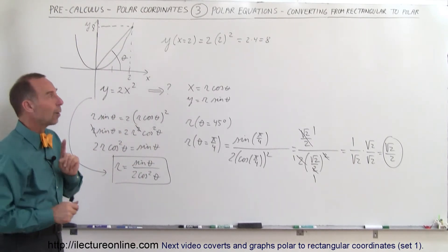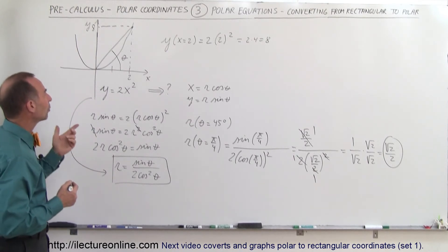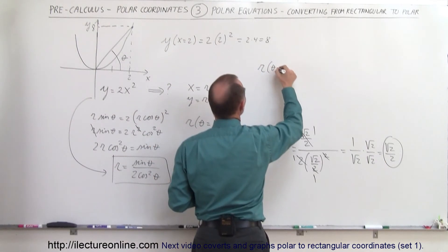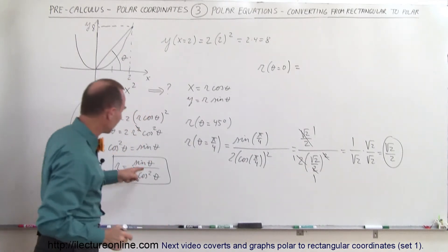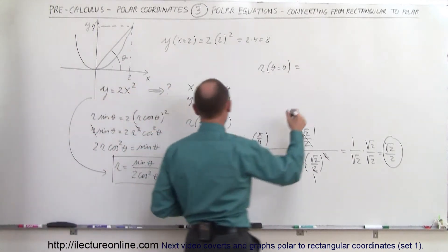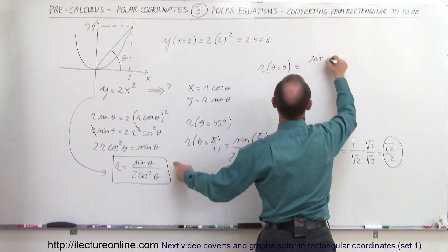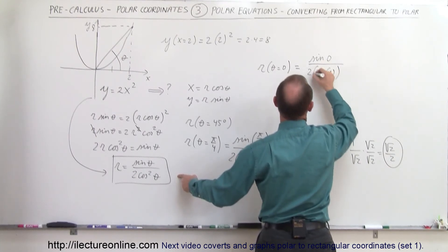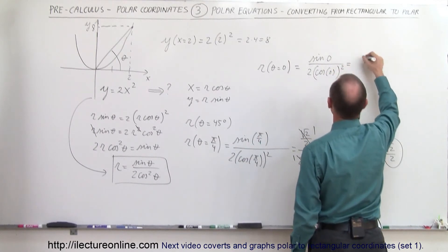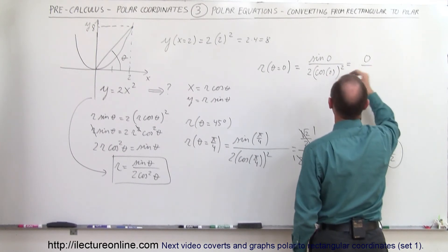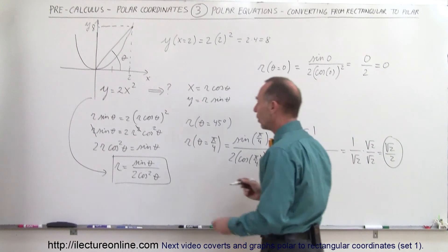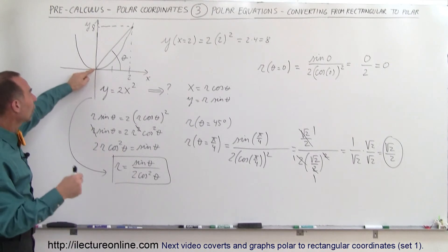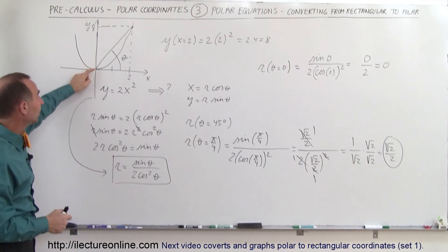Let's see what r would be when theta is equal to 0. When theta equals 0, we plug in 0 for theta: we get the sine of 0 divided by 2 times the cosine of 0 quantity squared. The sine of 0 is 0, and the cosine of 0 is 1, so that gives 0 divided by 2, which equals 0. This means when the angle is 0 — pointing in this direction — the radius r, or distance to the point on the graph, would be 0, right at the origin.